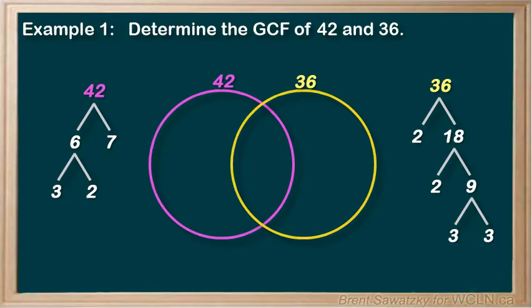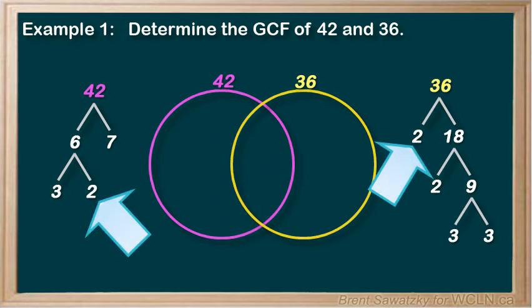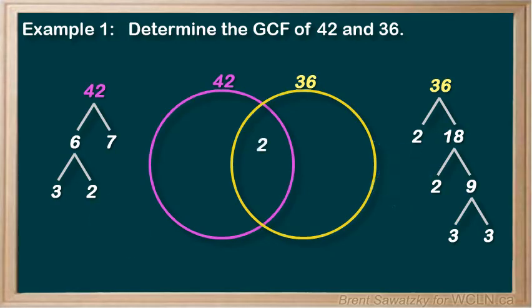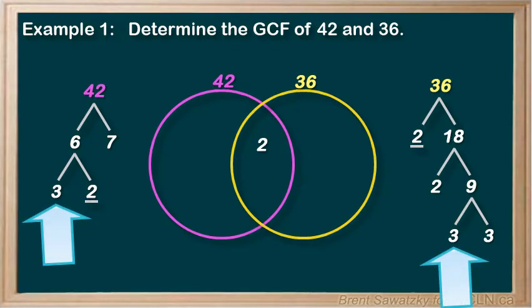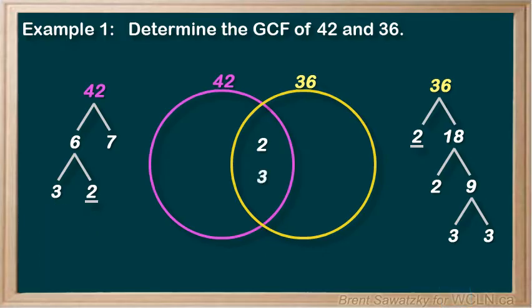Now it's time to put our prime factors into our Venn diagram. First, let's identify the factors that belong in both circles — they'll go into the overlap region. We see a 2 in both factor trees, so let's place a 2 in the overlap area. That way, the 2 is in both circles, and we underline those 2s in both trees to show we're done with them. I also notice a 3 in both groups, so let's place the 3 in the overlapping area as well, and underline both 3s.